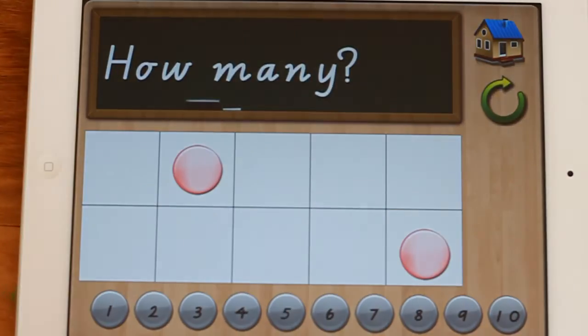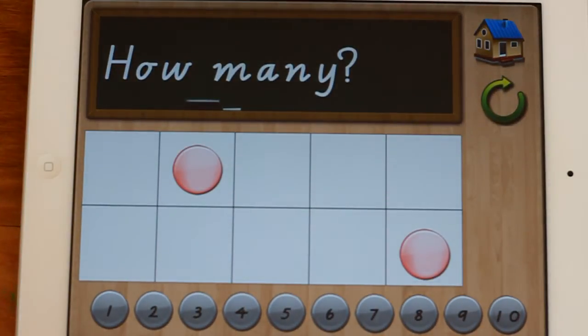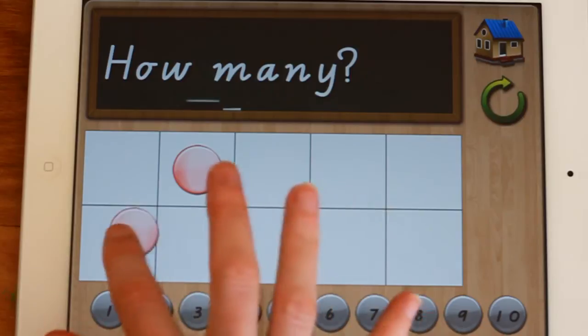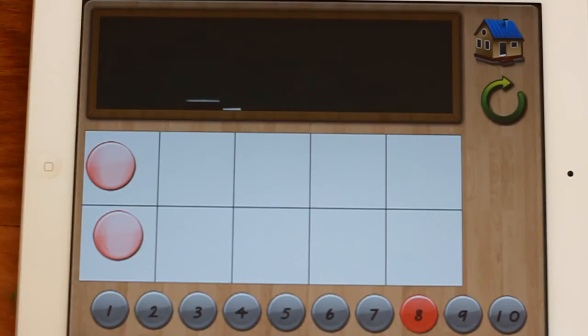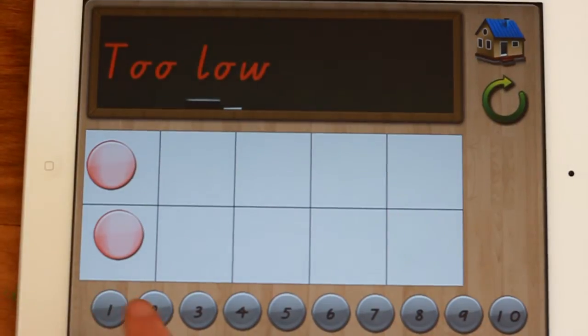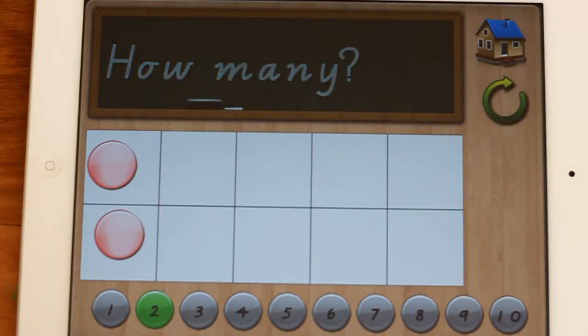This time it's the opposite, looking at the tens frame and counting. One way to use this is to say, well yeah, you know that's two, but how should we put it on the tens frame so that it makes it easier to count? I'll try and get it wrong. Too high. Too low. Correct.